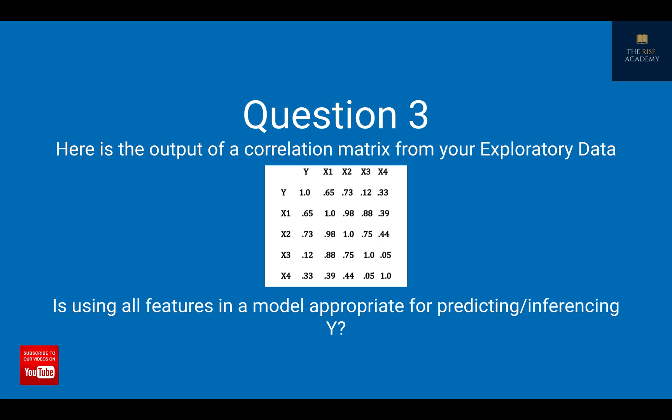The correlation between x1 and x2 is 0.98, between x1 and x3 it is 0.88, and between x2 and x3 it is 0.75. So there's a lot of high correlation between the independent variables. The question is asking us: if this is how our input variables are related to each other, should we use all the features to predict Y or should we not?